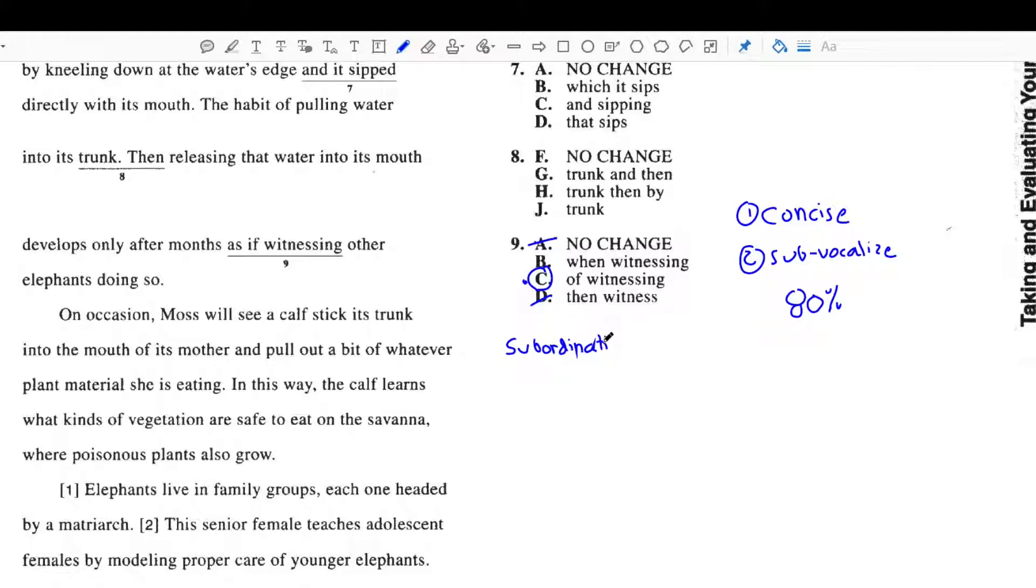So, a subordinating conjunction. I'll write it down here. You don't need to write this down, but just so you can see what it looks like. And, that would be versus a preposition. Okay. So, first, let's get these two ideas out of the way.